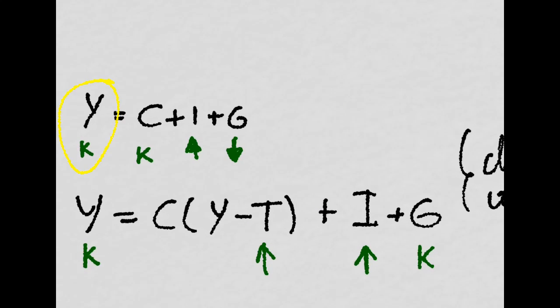So, since output is constant at potential output, and if you take the decrease in G, then the decrease in G will have to be equal to the increase in I for this to be constant.